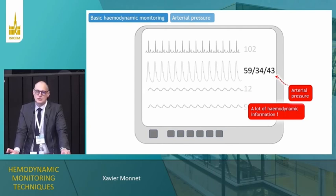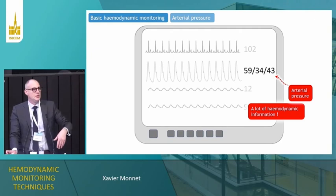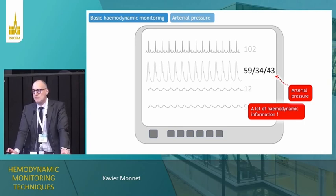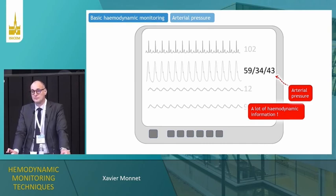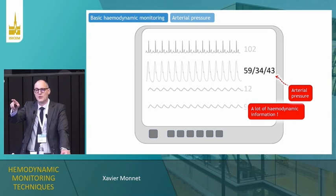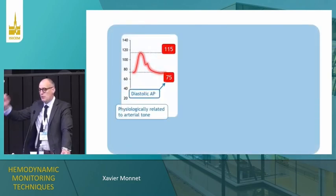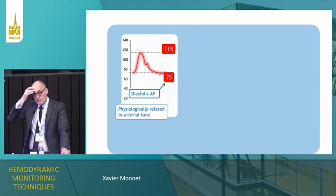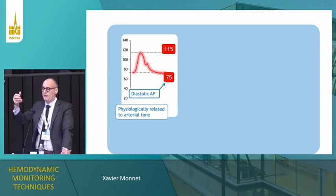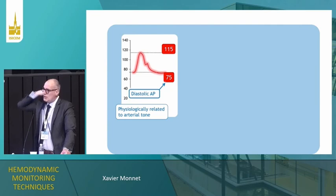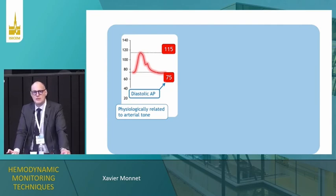Among you, who measures or calculates the systemic vascular resistance (SVR) in practice? Nobody measures the systemic vascular resistance. How do you decide to start norepinephrine in this patient? The diastolic blood pressure — and likely you're right, because the diastolic blood pressure is physiologically related to arterial tone. It is a pure marker of arterial tone, not vascular tone — that arterial tone. It is also influenced by heart rate, but besides heart rate, the only determinant is vasomotor tone — much better than systemic vascular resistance.